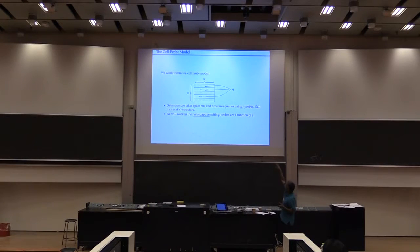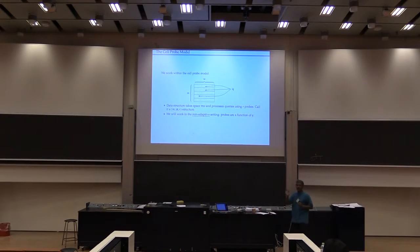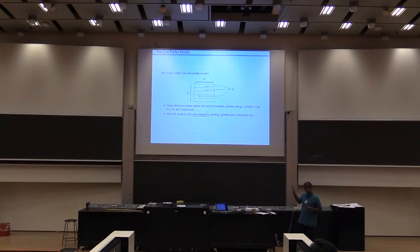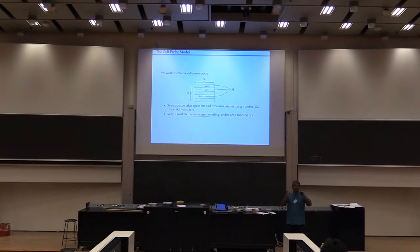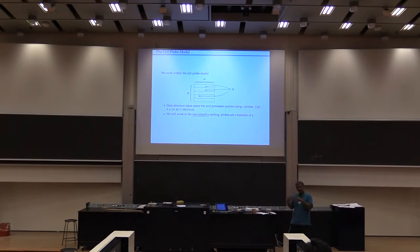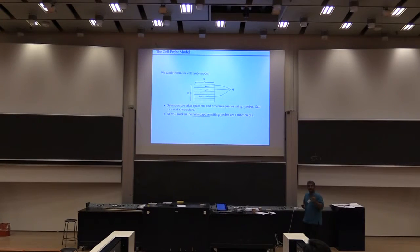In particular, the structure has m cells, each of width w. I'm going to make r probes to answer a query. In this paper, we work in what is called a non-adaptive setting, which is a weaker setting — it assumes that you make your r probes in parallel in some sense and get the answer. You're not allowed to make one probe, see the result, and change your next probe.